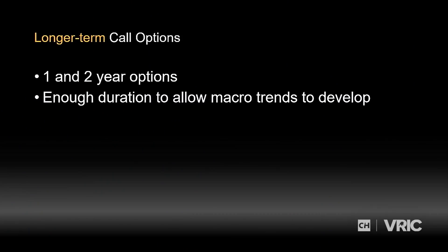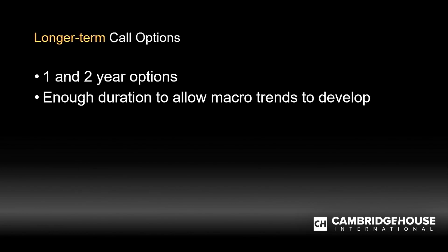Let's look at an example. I want to focus on long-term options. Why? Because we just determined the average length of one of these cycles higher or lower in gold is about nine months. So if we're looking at an option that is one or two years in duration, we have a pretty good chance of holding an option through one of these full cycles.